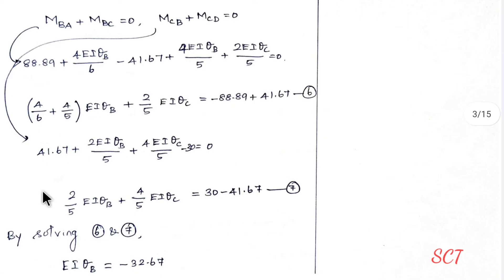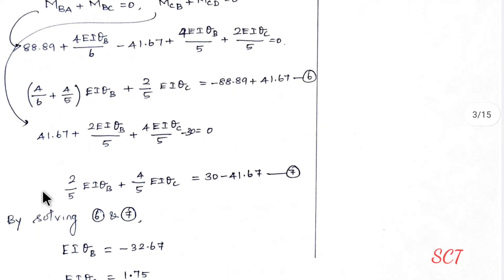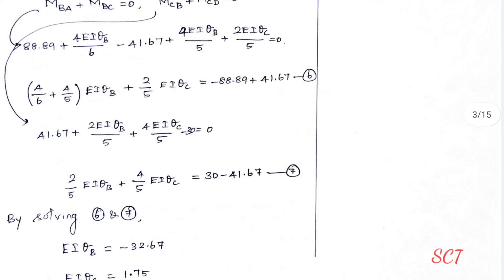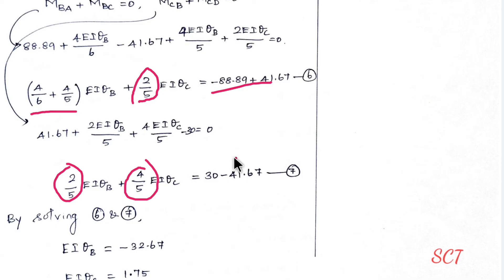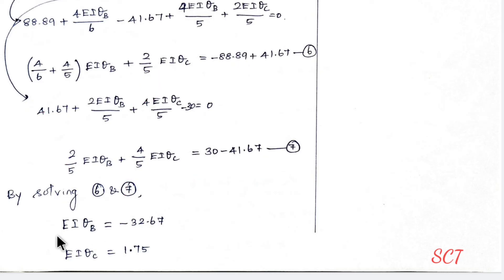Now let us solve the equations using the calculator in equation mode. Press the equation button, enter the number of unknowns as 2. Enter A1, B1, C1 and A2, B2, C2 values by substituting all coefficients. Solving gives EI·θ_B = some value and EI·θ_C = 1.75.